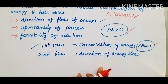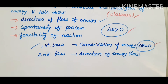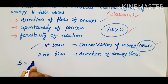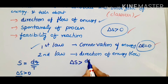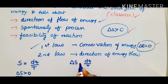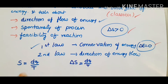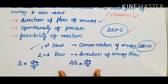The second law of thermodynamics can be expressed mathematically using entropy. As discussed in earlier videos, delta S equals dq over T, and this is always greater than zero. The entropy of the universe is always greater than zero. So delta S equals dq divided by T.